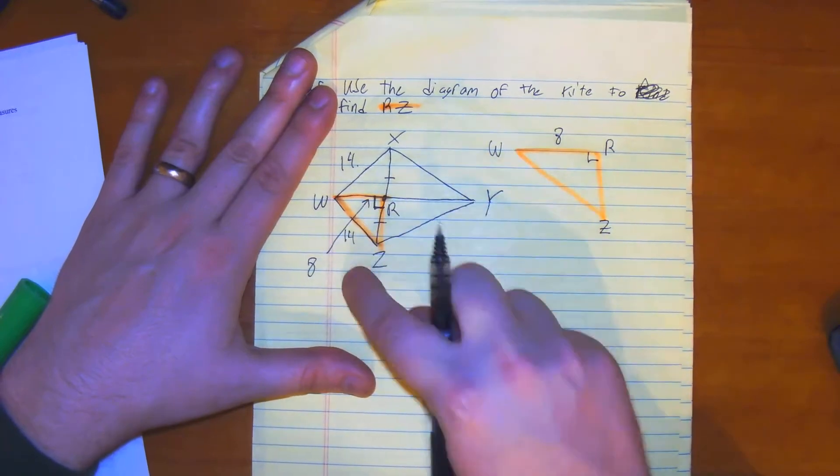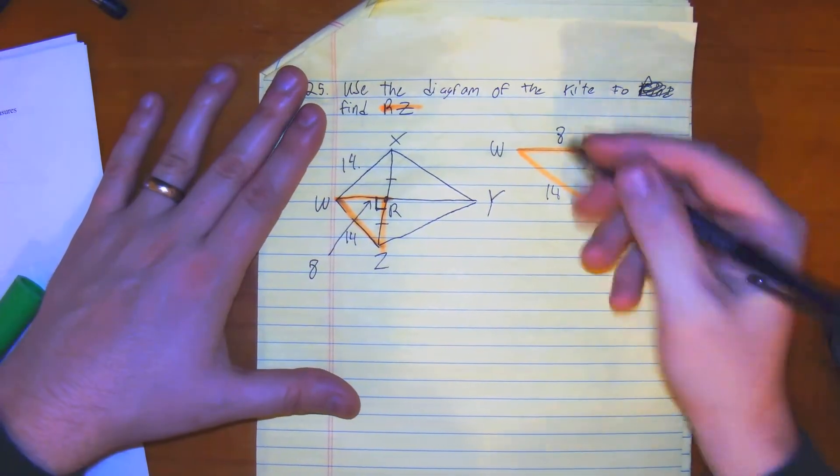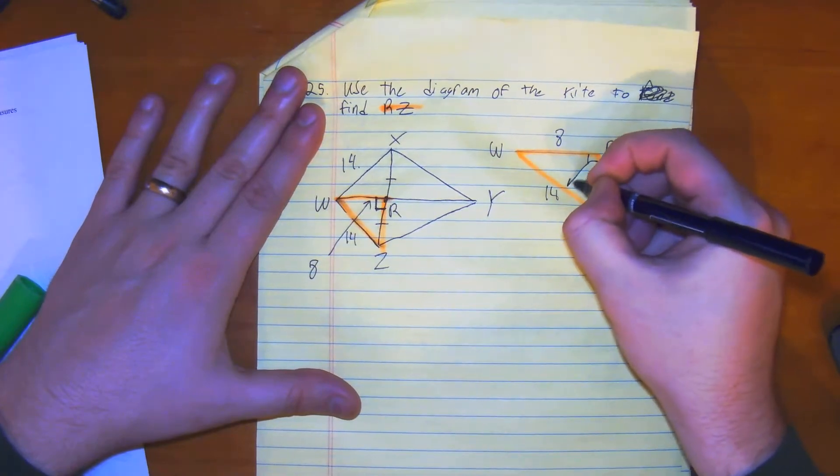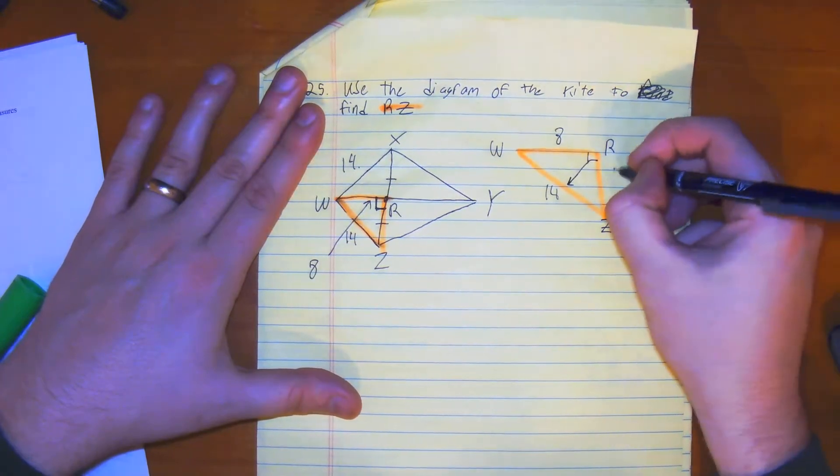We know this is 8. This is 14. But we want to know what RZ is. I draw an arrow from the right angle. That's my value of C. So that means we have our A, but we don't have our B.